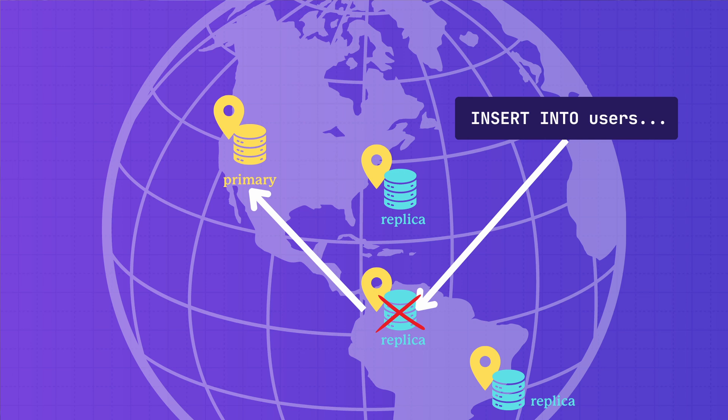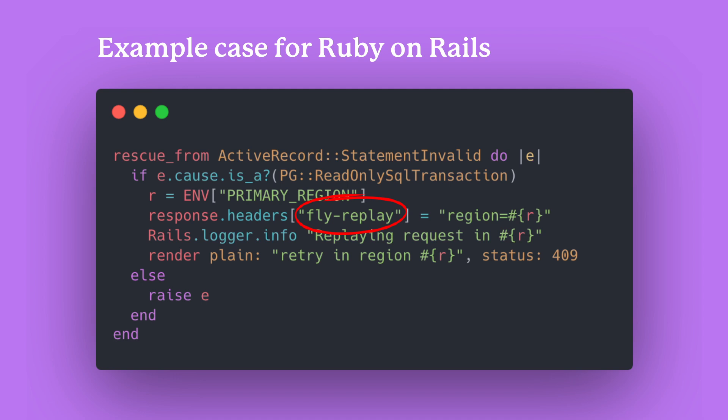This is all possible on Fly.io because of Fly Replay. Fly Replay is a header that allows you to replay requests to another Fly application, a given region, or even a specific machine. This neat little feature is not just useful for globally distributed databases but has a lot of applications. If you'd like to learn more, I've got a link down below.